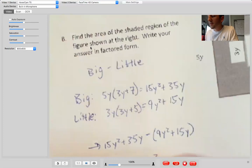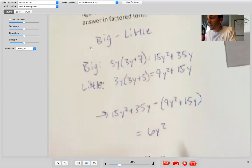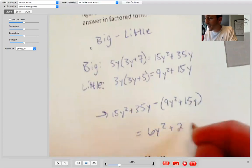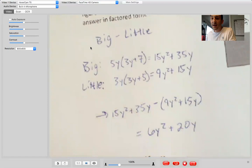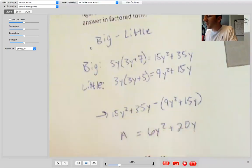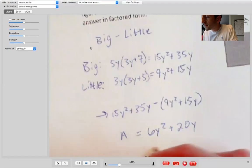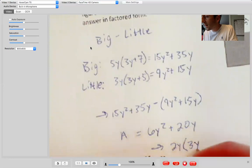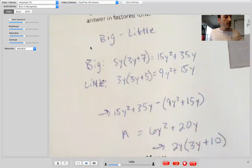So six Y squared. And then these two are like terms as well. So I have 35 plus negative 15 or 35 minus 15 and be positive 20. So plus 20 Y. And then the last step is we just want to, we just want to factor out that greatest common factor. And that'll be my final answer. So greatest common factor of these two looks like two Y. So two Y times the quantity three Y plus 10. Make sure that's right. Okay. Looks good.